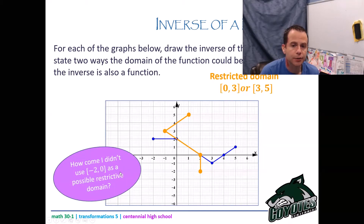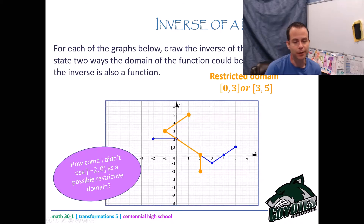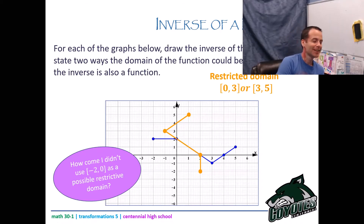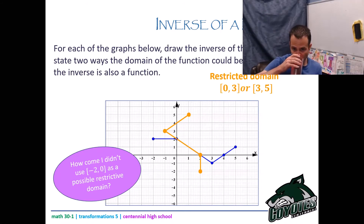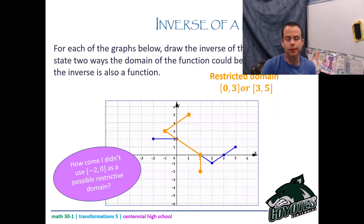To restrict the domain of the original, just look for a piece with no change of direction. I chose zero to three — no change of direction there. I also chose three to five — no change of direction there. Be careful with a function that has a start and stop: you can't just say x greater than three because the graph doesn't exist forever past three. You have to say three to five. Also, the reason I didn't use negative two to zero is that it's a horizontal line, and the inverse of a horizontal line is a vertical line, which does not pass the vertical line test.